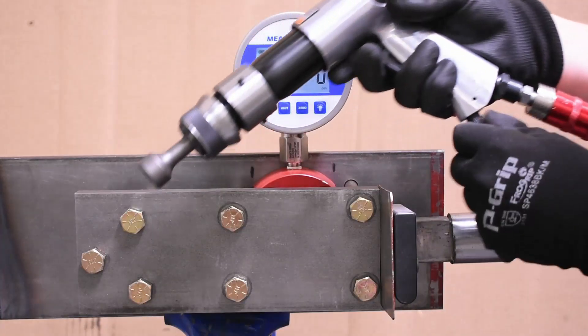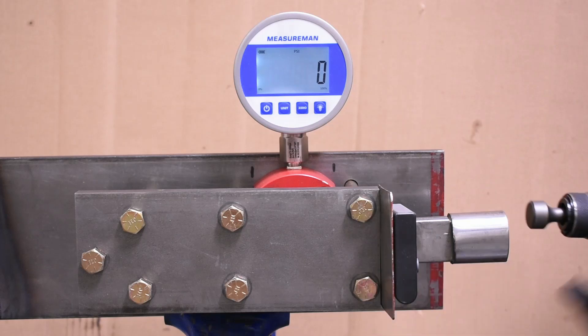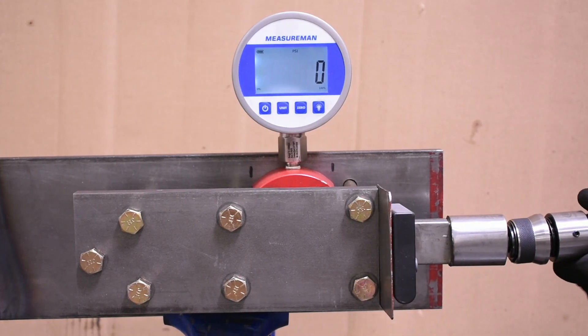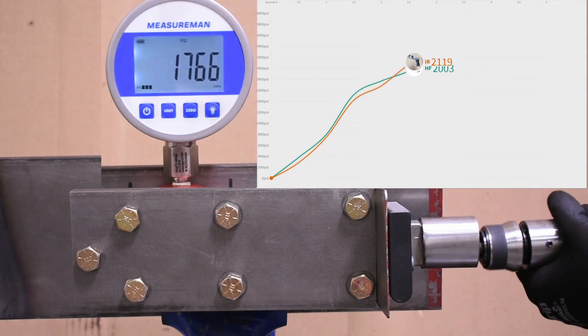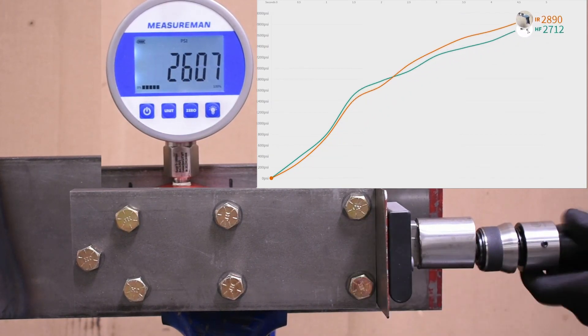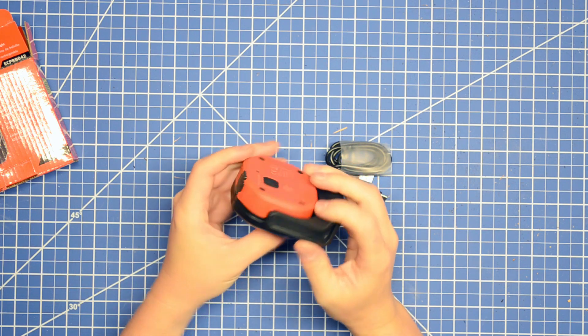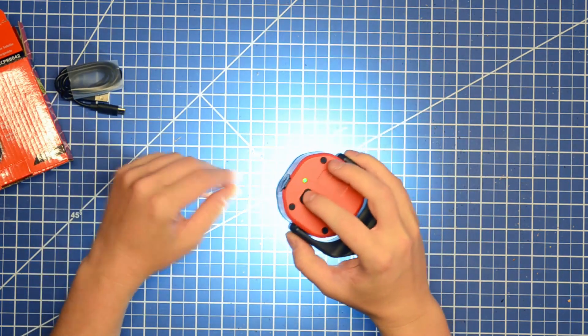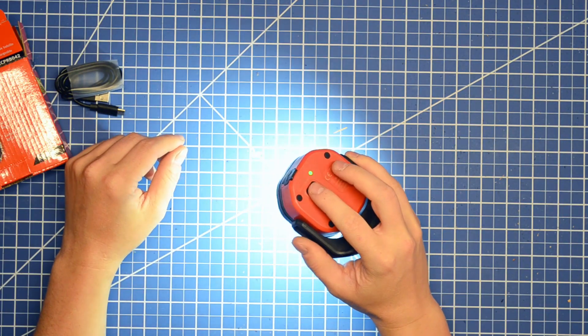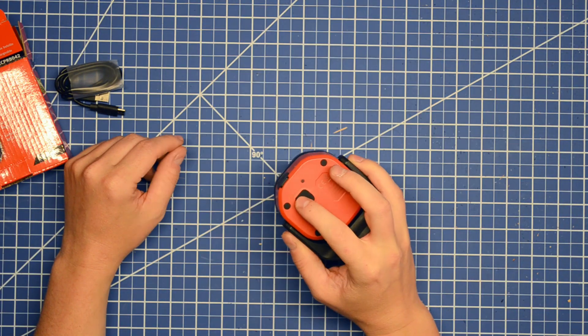These won't replace the bread and butter impact testing that we do on this channel but we want to sprinkle them in from time to time because we use lights a lot when working on cars, and maybe you're curious who's selling you a load of BS in the lumen specs.